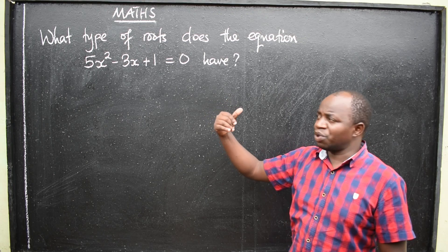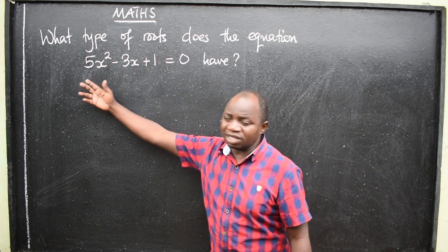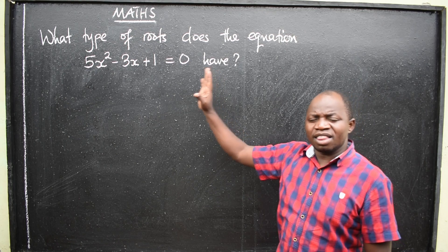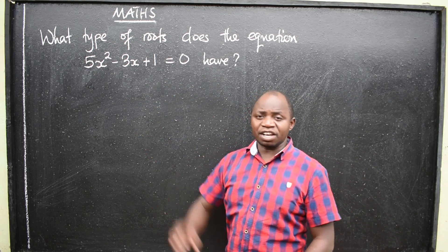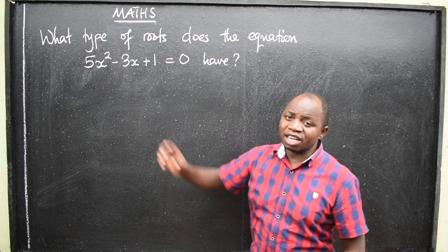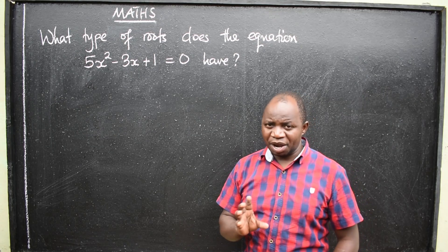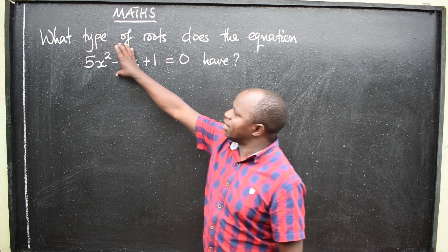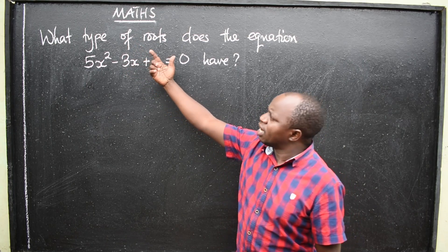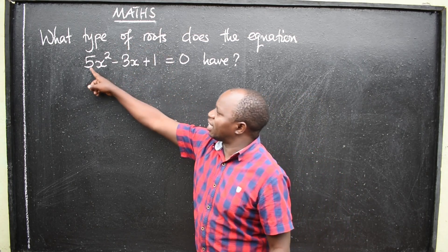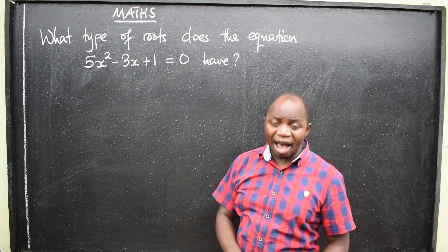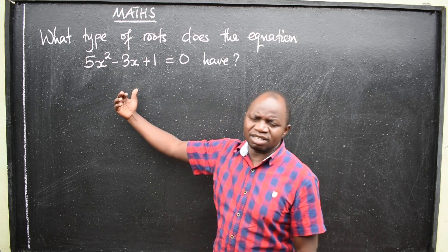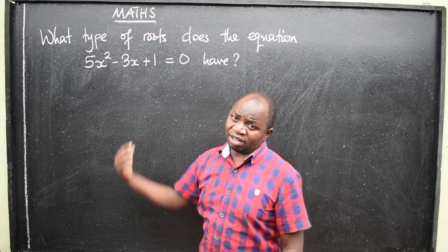We want to know the type of roots that this equation has. This is from Quadratic Functions, and what you are seeing here is a quadratic equation. So how do we determine the type of roots that this equation has without really finding the exact values of x?